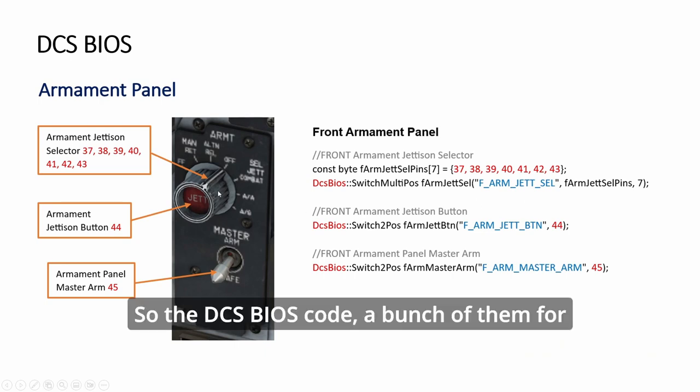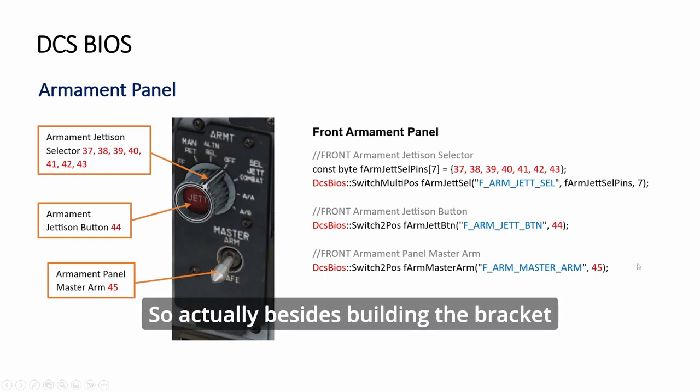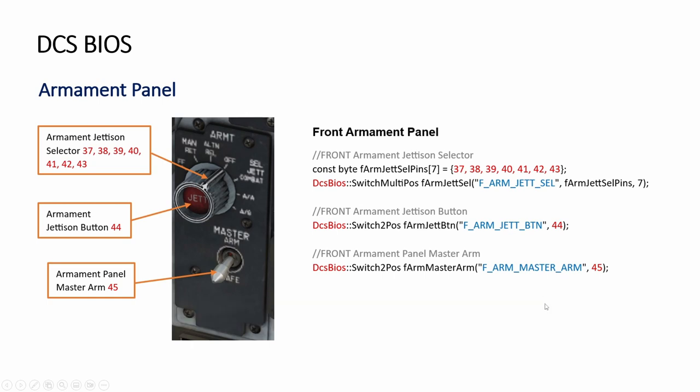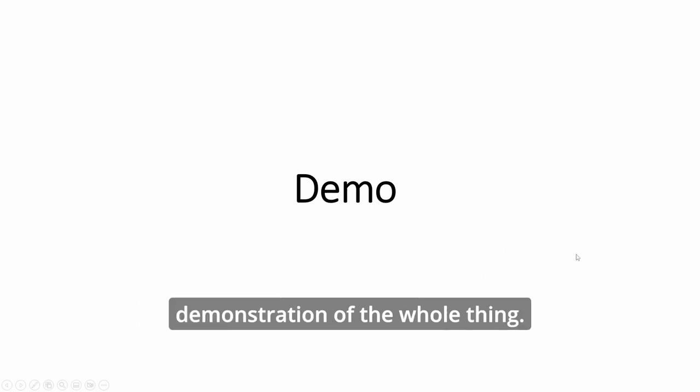The DCS BIOS code has a bunch of them for the switch, the push button, and the toggle. Actually besides building the bracket, the whole thing is quite simple. Now we will see the FreeCat build and then the demonstration of the whole thing.